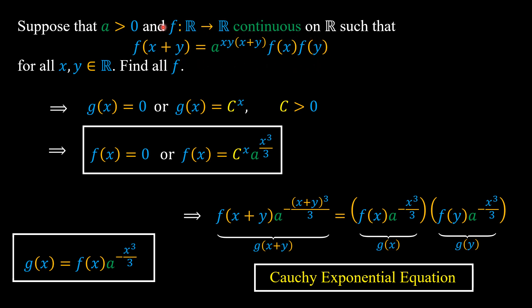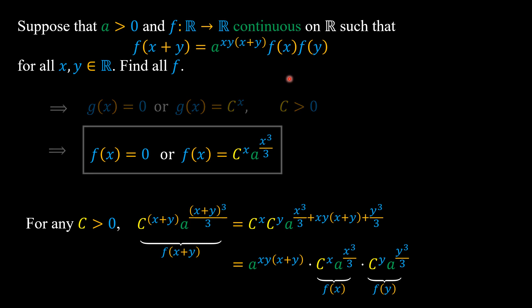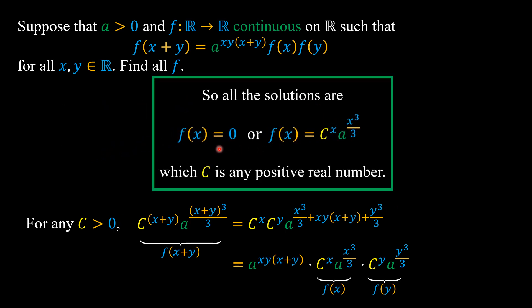It is also easy to check that for any positive real number c, f(x) equals c to the power of x times a to the power of x³ over 3 also satisfies the functional equation. So all the solutions are: f(x) equals 0, or f(x) equals c to the power of x times a to the power of x³ over 3, where c is any positive real number. And there we are done.